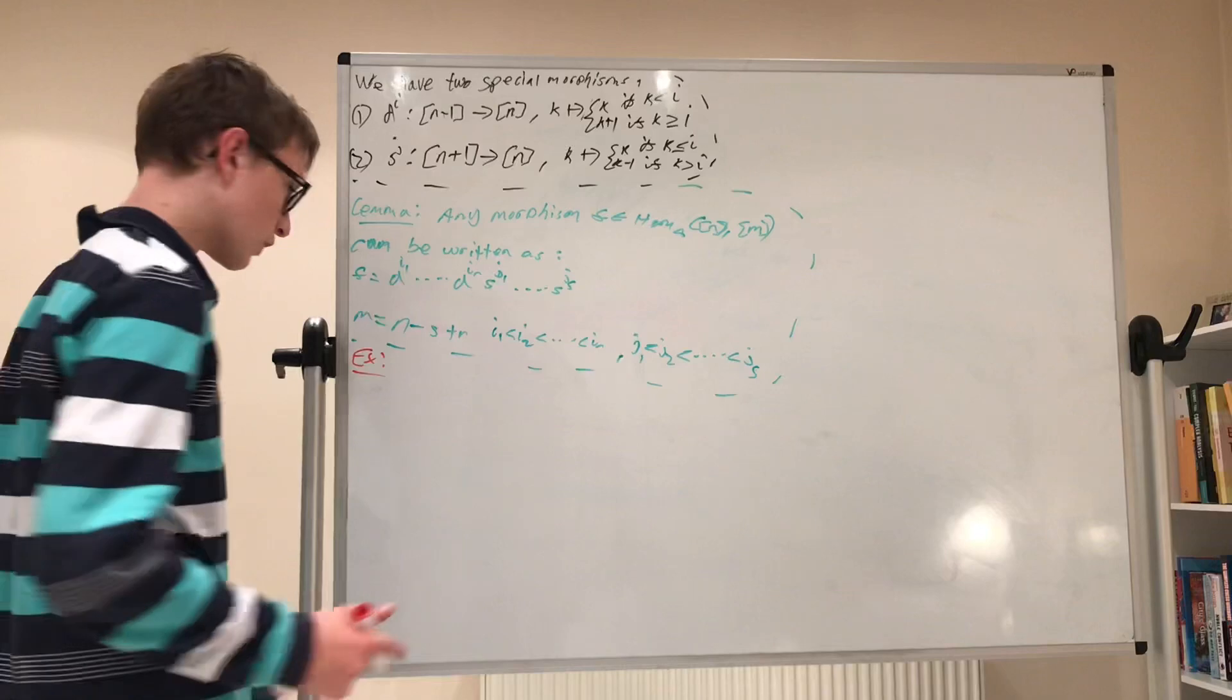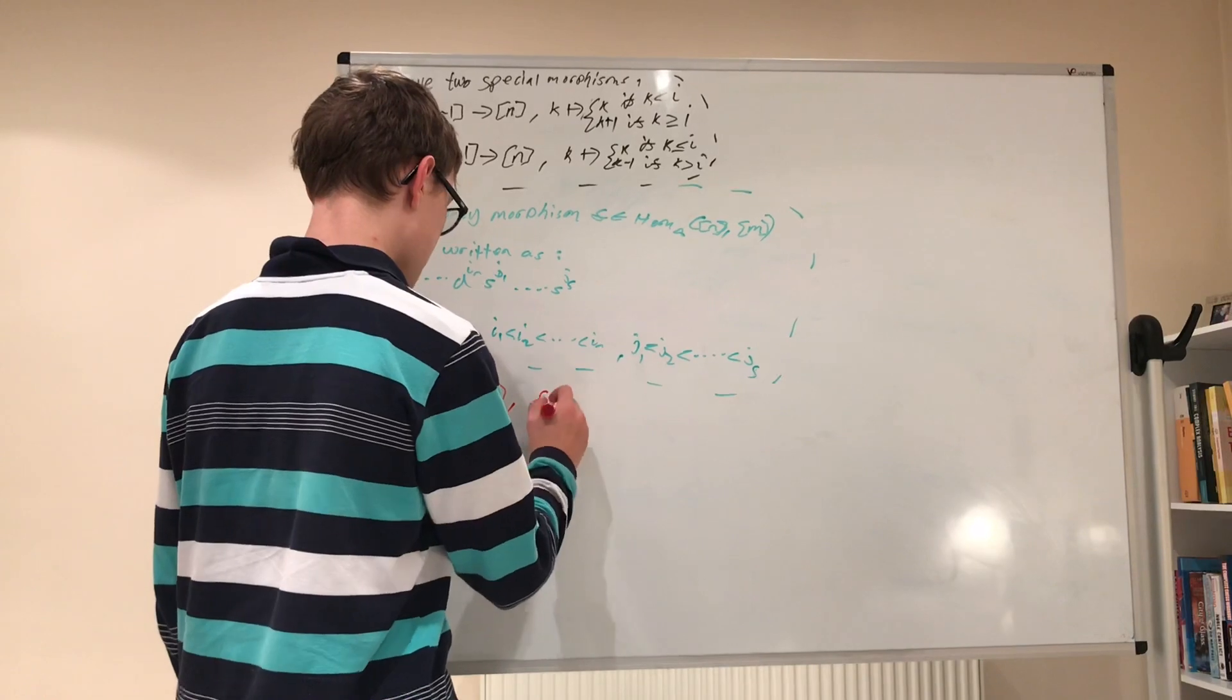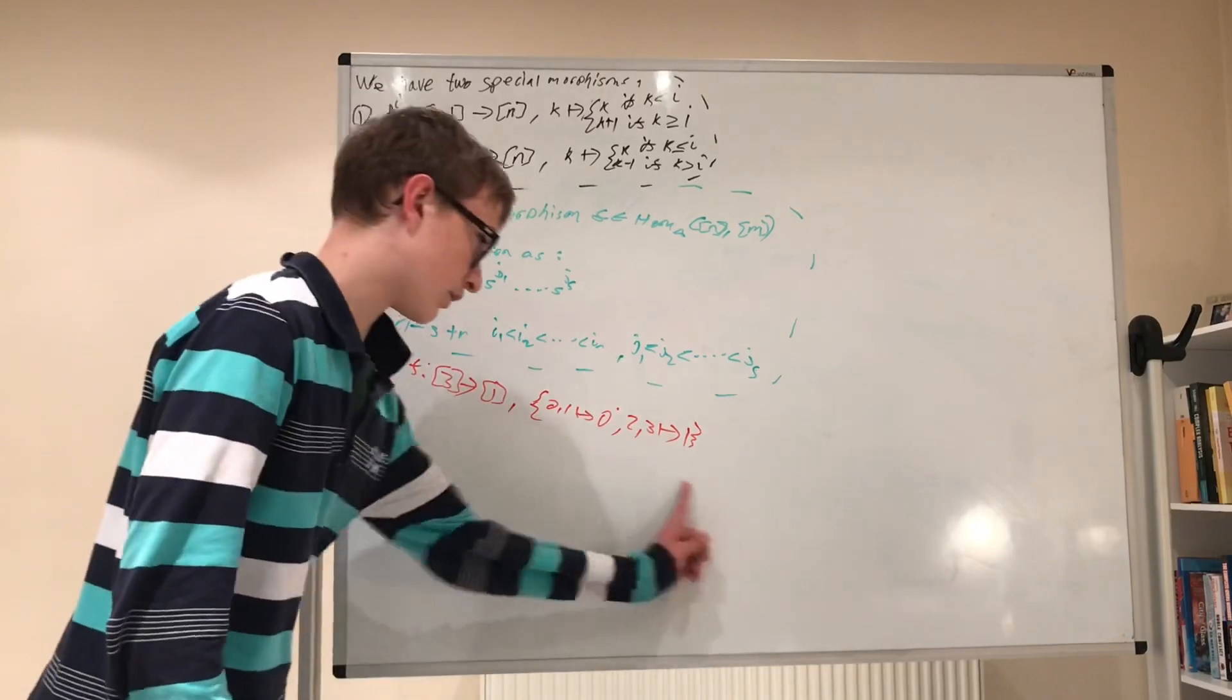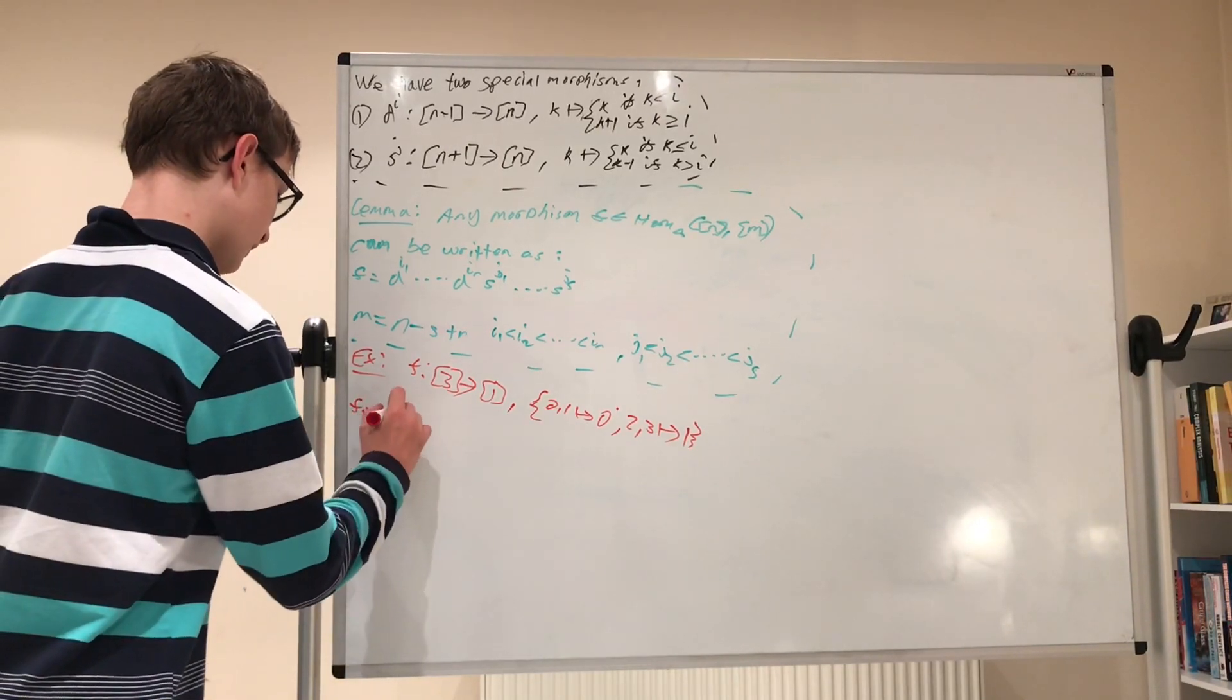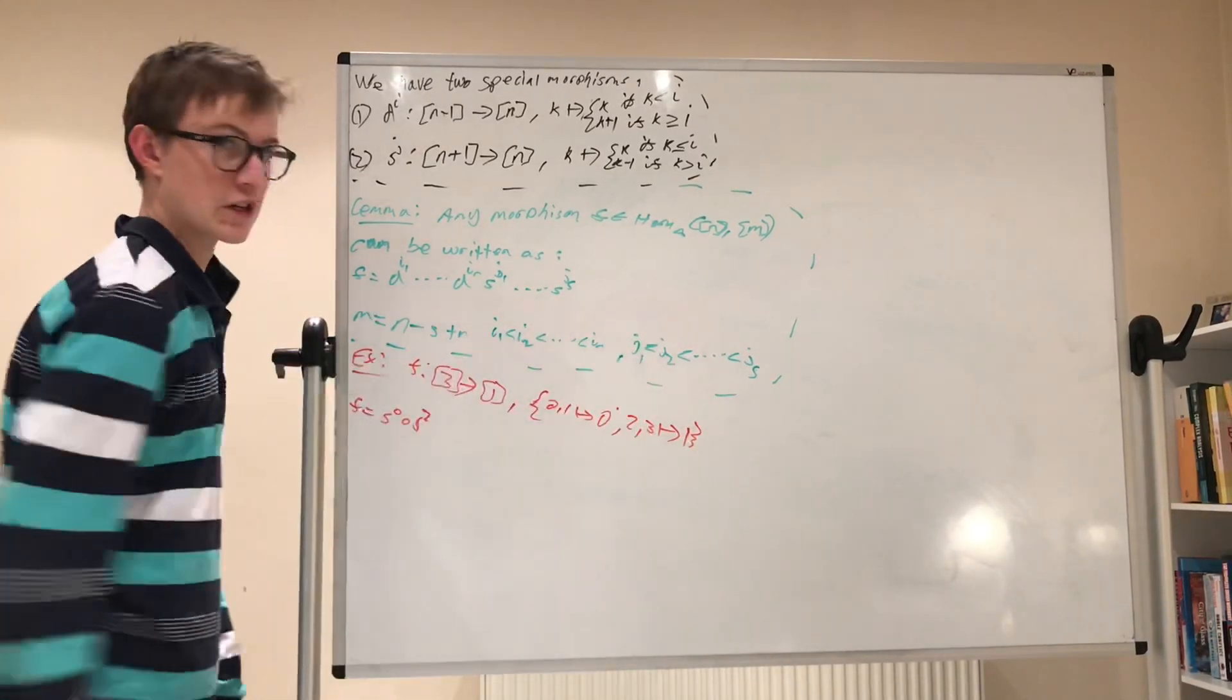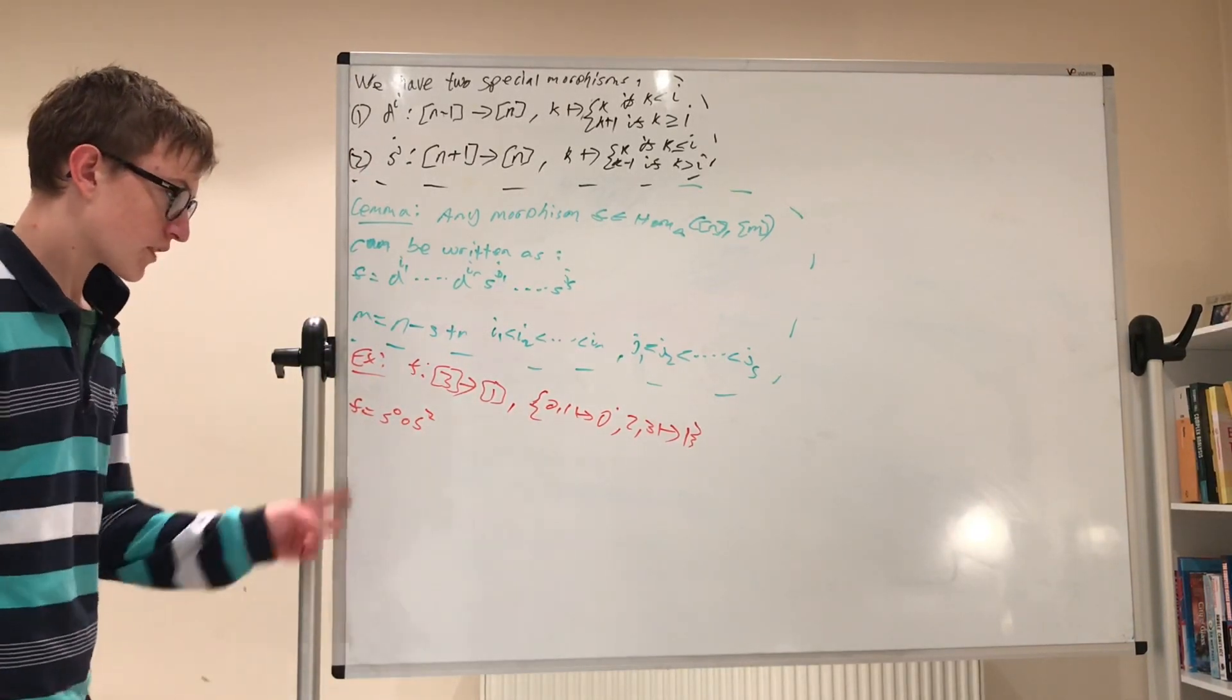So, the function, the morphism f, which takes you from 3 down to 1, more specifically, it maps 0 and 1 to 0, and 2 and 3 to 1. So this is what the rule that it satisfies. And, how can it be written? Well, f equals s0 compose s2. Now, this can be easily checked, but let's just, I won't check that it's equal to this, but I will check that these conditions are satisfied. Although, if you really want to go through it, you can check that this composition actually is true. Anyway, let's just check whether the conditions are satisfied.